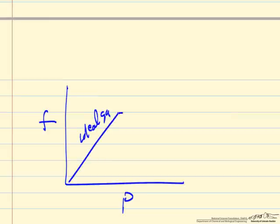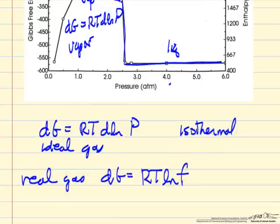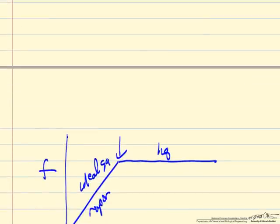So if we were to plot fugacity versus pressure, if we're an ideal gas, that would be a straight line. And then when we became a liquid at high pressure, so liquid, vapor, gas, phase change here at saturation pressure. For liquid, just like Gibbs free energy doesn't change, since Gibbs free energy is related to fugacity, it means fugacity doesn't change very much as we change the pressure.